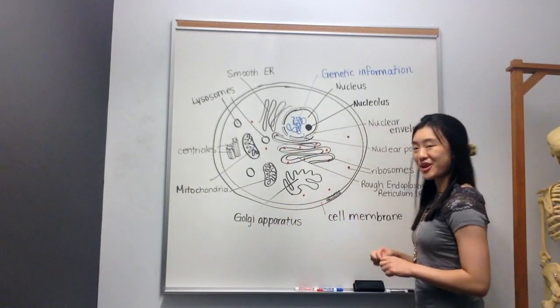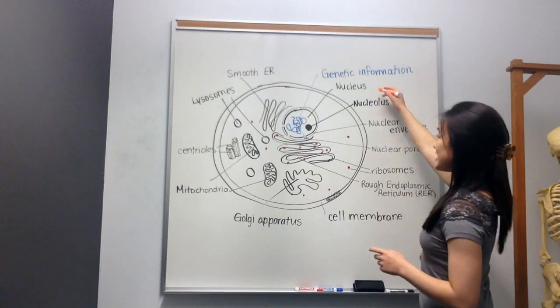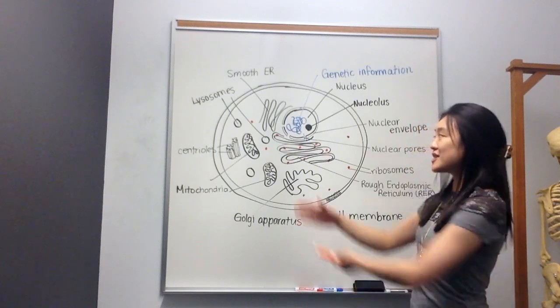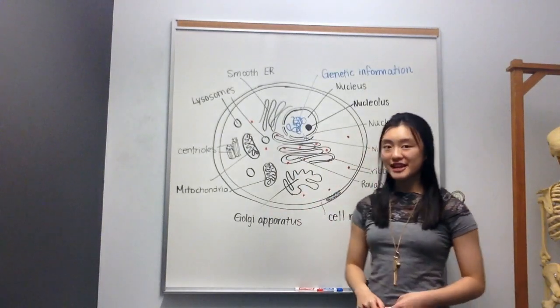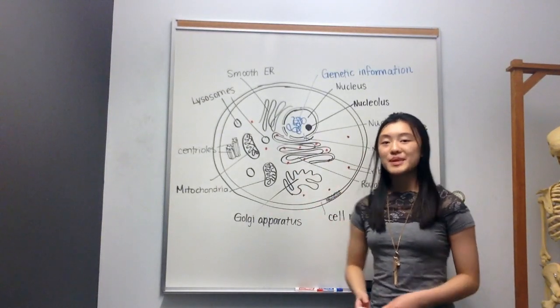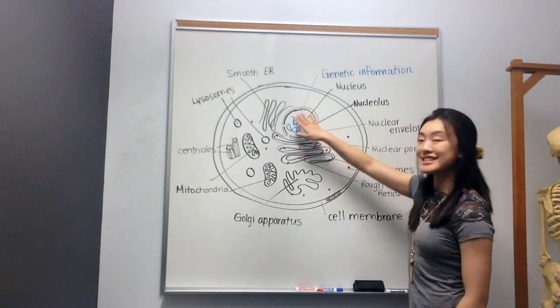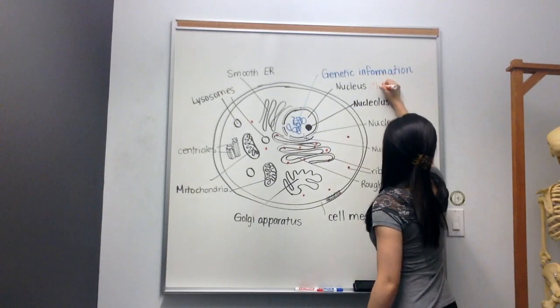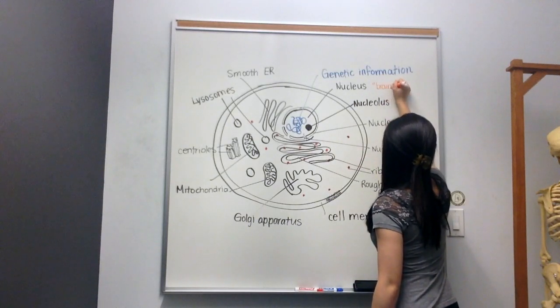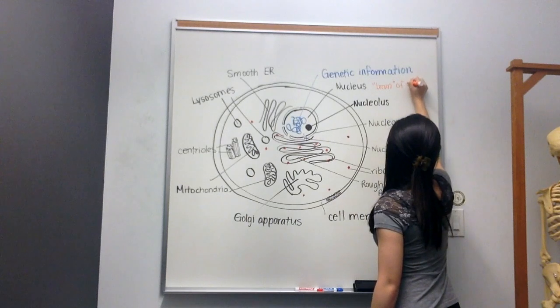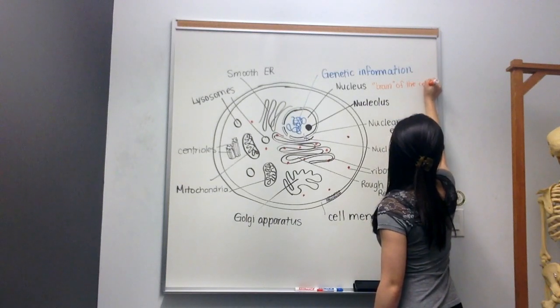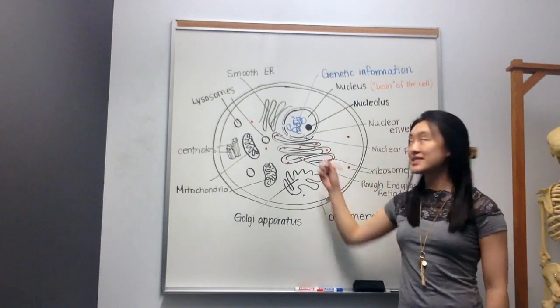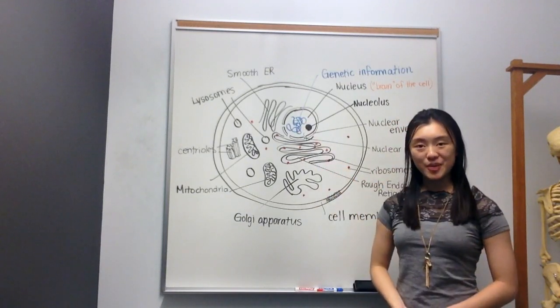And I'll write them down in orange. So the nucleus is sort of the brain of the cell. If this was a city, the nucleus would be city hall, because it provides all of the rules and contains all the important information. So in brackets, I'll do brain of the cell. And again, it contains very important genetic information.